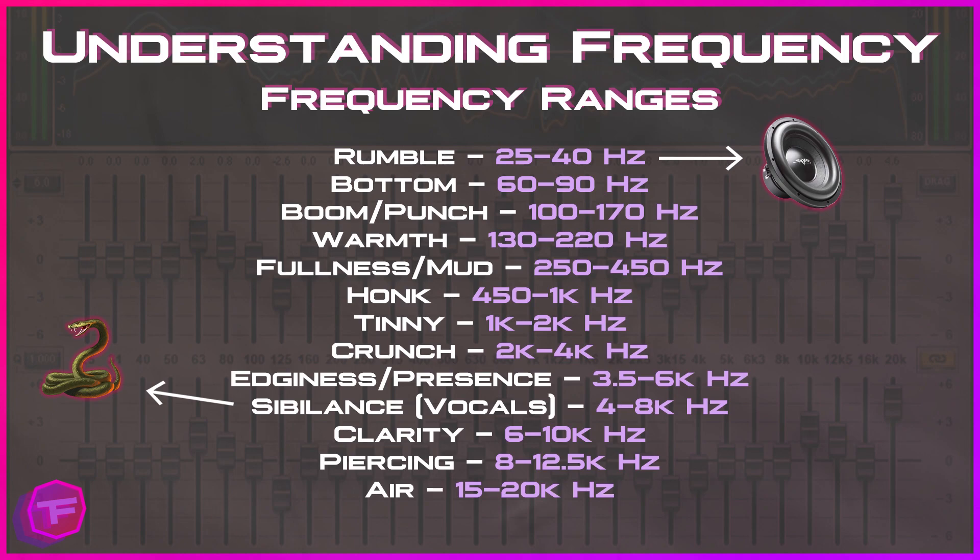Here are some very important frequency ranges to note. The rumble sound sits around 25 to 40 Hz — a very low frequency, like what a sub in your vehicle could make. The bottom sits around 60 to 90 Hz. Boom and punch is 100 to 170 Hz. You'll get a lot of warmth from vocals and instruments in the 130 to 220 Hz range.